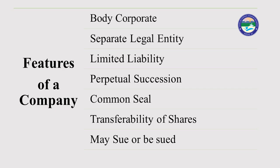So company accounting helps us to prepare or show the current situation of all the money which has been generated with the help of shares. Company accounting helps to maintain those accounts which show the current situation of that money. As we have discussed, a company is an artificial person — it is created by law. It is separated from its members. Its entity or existence exists separate from its members, called shareholders.